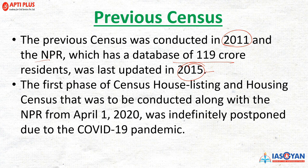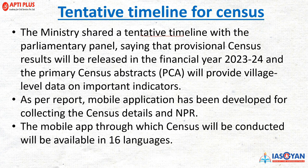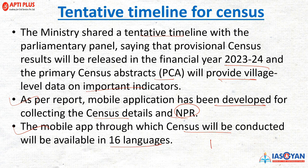The first phase of census housing listing and housing census, to be done along with NPR, was identified for April 1, 2020 but was postponed due to the COVID-19 pandemic. The next census, which usually comes every 10 years, has been extended to 2024 due to COVID-19. The ministry has shared a tentative timeline with the parliamentary committee, indicating that census calculations and data would be coming from 2023 to 2024. A mobile application has been developed for collecting census data and NPR data, available in 16 languages.